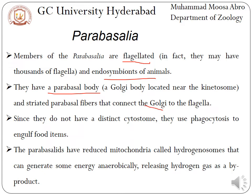Parabasalia do not have a distinct cytostome and they do not have phagocytosis. They have reduced mitochondria called hydrogenosomes, which generate energy anaerobically. To compare: in Fornicata the modified mitochondria are called mitosomes, while in Parabasalia they are called hydrogenosomes.